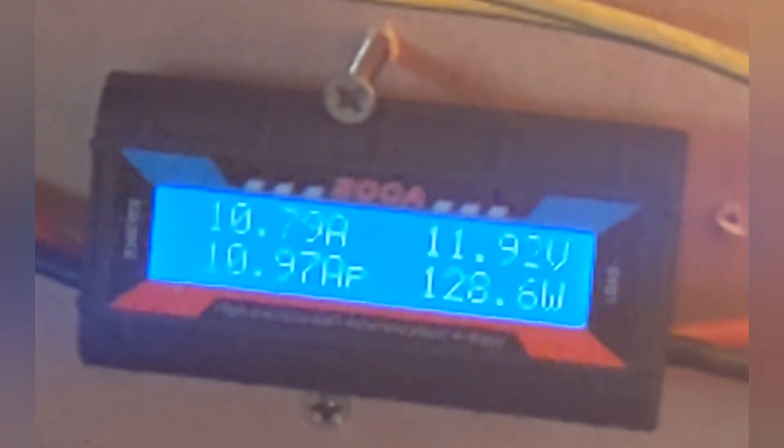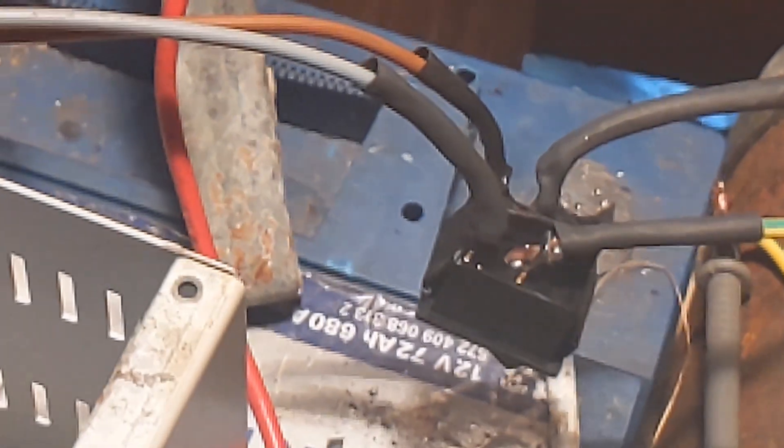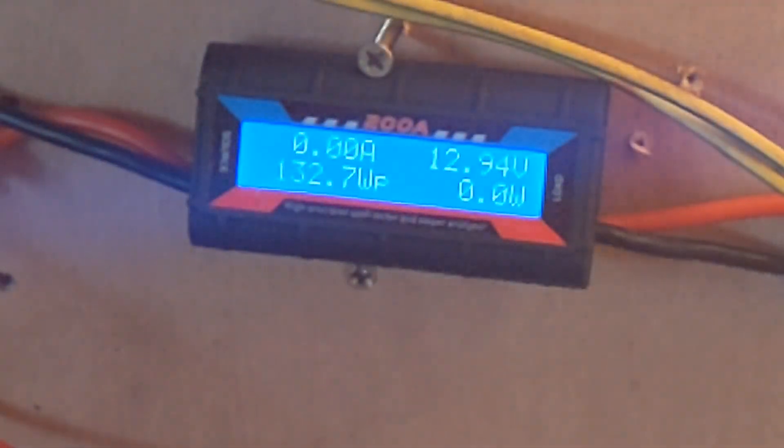That's pulling 10 amps approximately. Let's just test the other one. This dump load has a switch connected to it, so when I hit the switch it will start pulling the juice from the battery. Nothing's coming in from the turbine at the minute, it's disconnected. That's five amps.